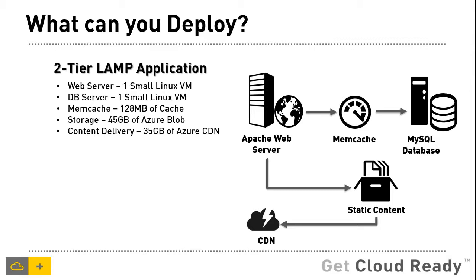You can store static content on Azure Blob Storage, going up to 45 GB per month, and deliver static or streaming content across the Azure CDN network, which can go up to 35 GB per month. This is a pretty decent setup, and any startup looking to go live with a minimum viable product using a simple two-tier application can quickly go live on Windows Azure — with a web server, database, memcache, CDN capability, and Azure Blobs.